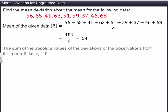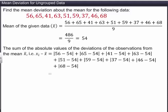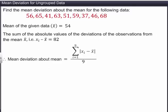Now, we'll find the sum of the absolute values of the deviations of all the observations from the mean x-bar. We get the sum of the absolute values of the deviations equal to 82. Therefore, the mean deviation about the mean is equal to the sum of the absolute values of the deviations divided by the number of observations. This is equal to 9.11.